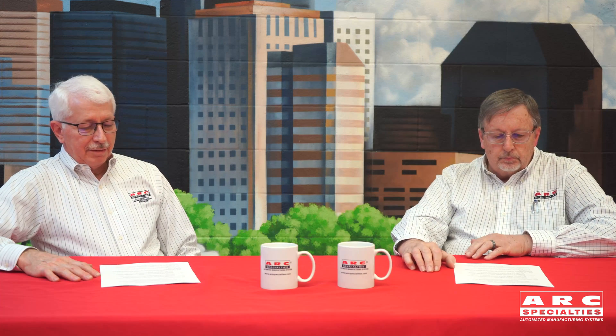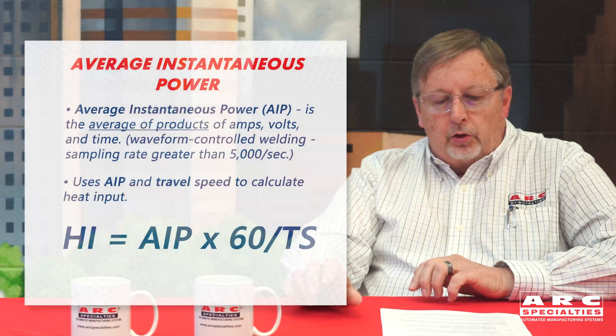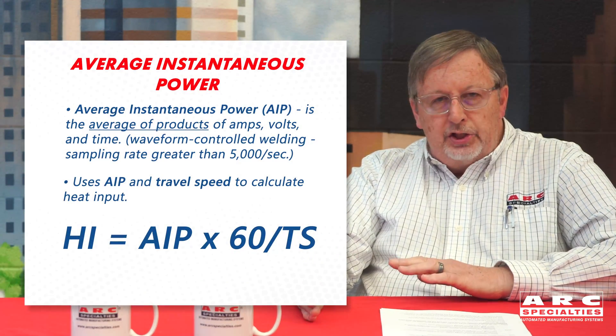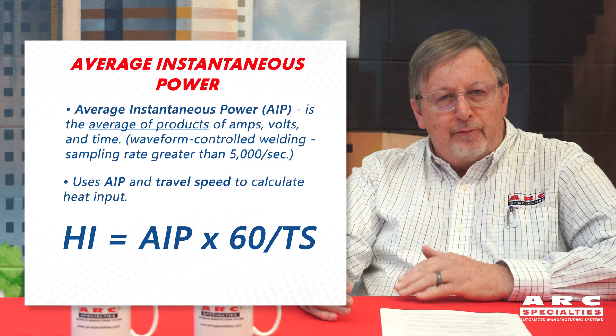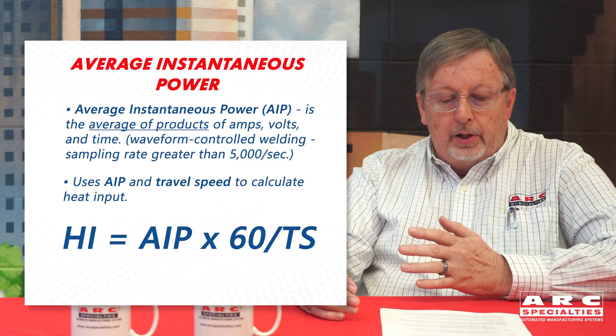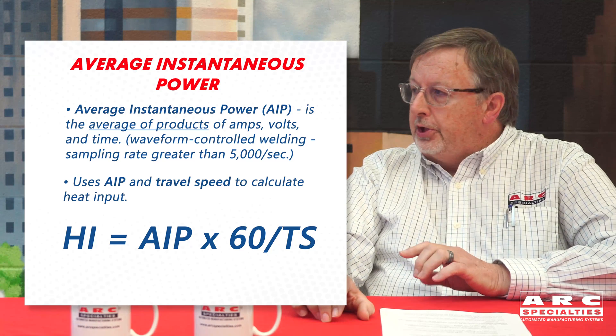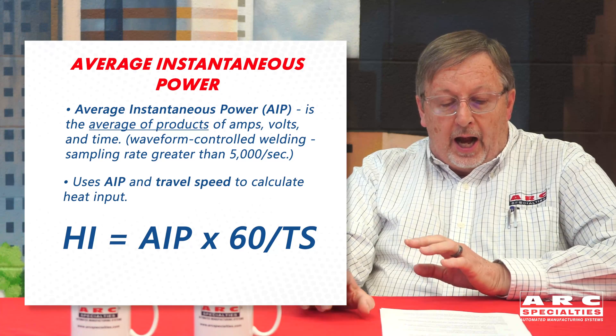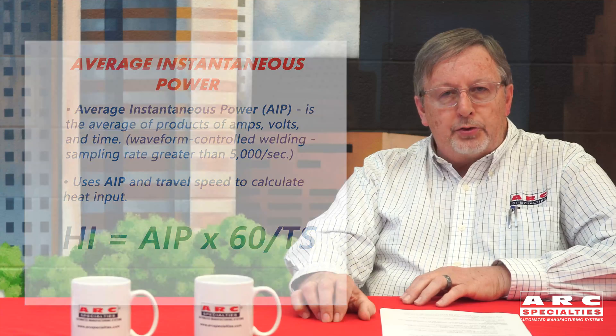And then we have average instantaneous power. Again, we are sampling at at least 5,000 times a second, and we are taking the average of those products of amps and volts over some amount of time. To calculate heat input using average instantaneous power, we divide the average instantaneous power times 60 by the travel speed — again, we end up with joules per inch of weld. So you can see we end up with the same unit of measure. The code says that you can use all three methods for calculating heat input: the old conventional way, total instantaneous energy, and average instantaneous power. But if we're using waveform-controlled welding, we can only use the latter two — instantaneous energy and power.